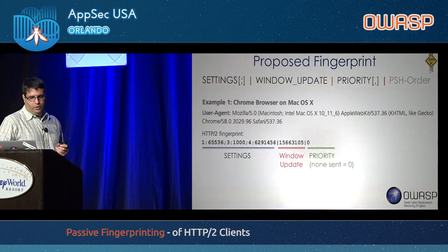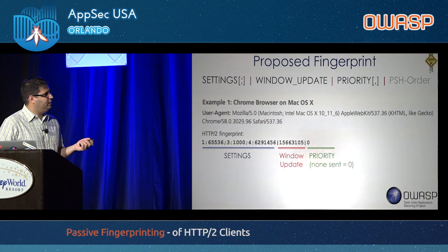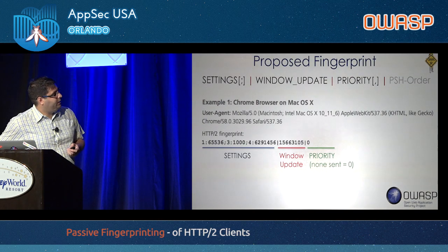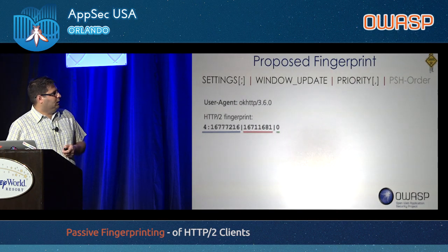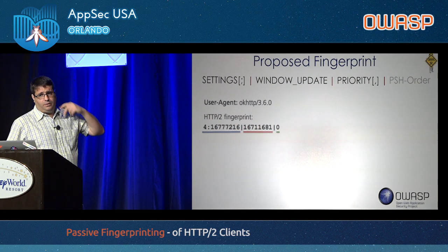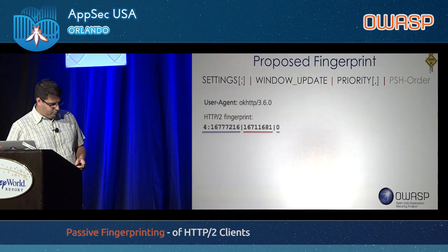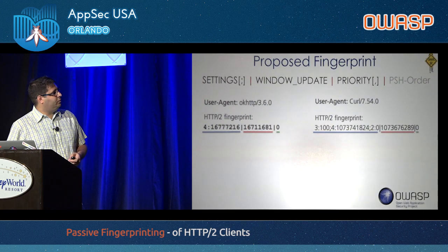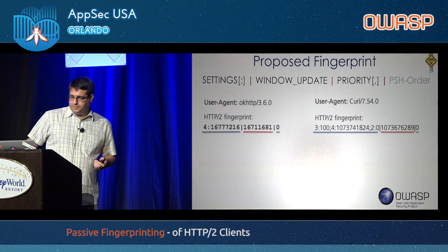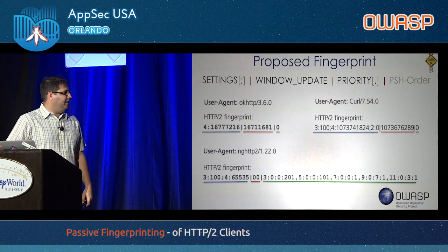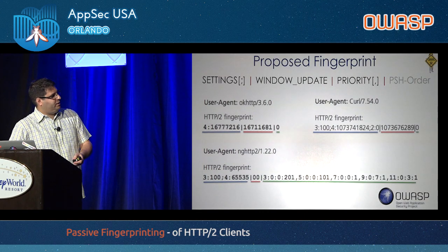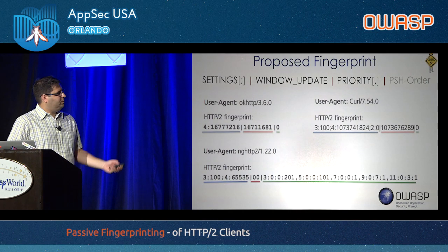A quick recap of the three components so far. For a Chrome browser on Mac OS X El Capitan, we have the settings, the window update, and the priority — in this case priority was not sent, so we set it to zero. The OKHTTP library common on Android shows one fingerprint; curl shows a different fingerprint; and NGHTTP — another widely used client — does not send a window update frame but does send priority frames. We're starting to see nice variety.